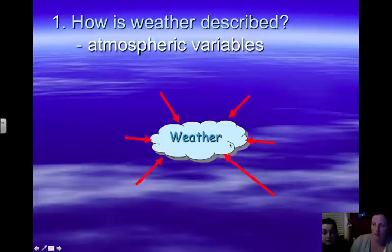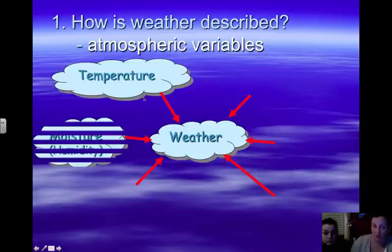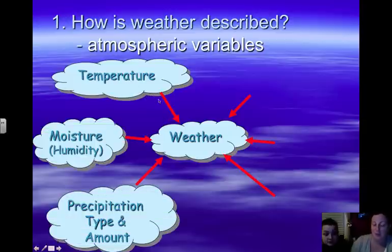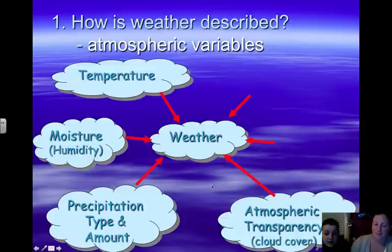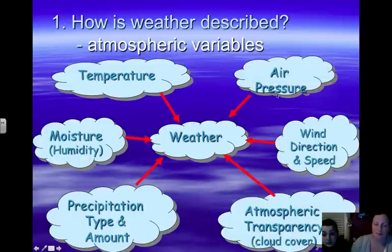If you're looking on the Weather Channel or the newspaper and you want to know what the weather will be like, some things you might want to know especially the temperature, the moisture, the humidity, what type of precipitation and how much, the atmospheric transparency which means how much cloud cover is out there, the wind direction and speed, and the air pressure. All these factors collectively make up the weather.